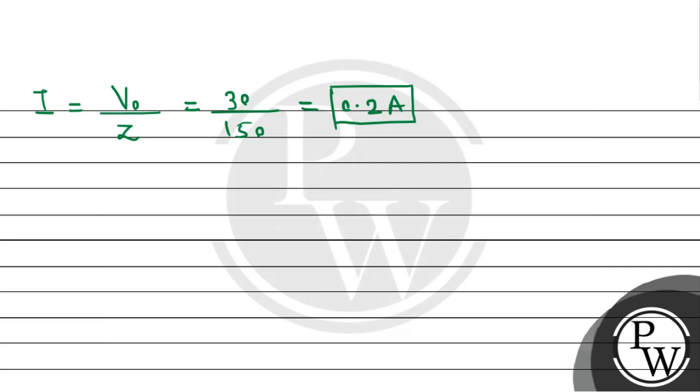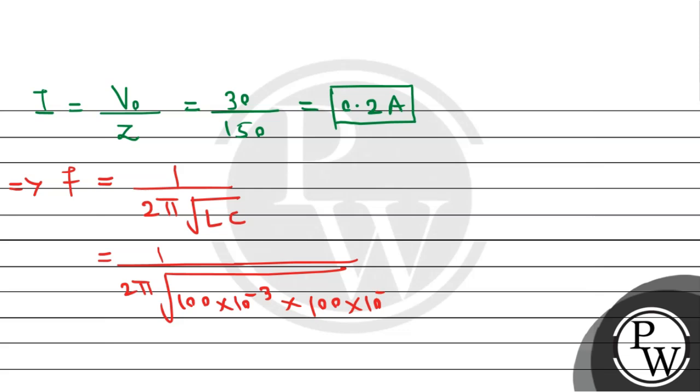Now, next thing we need to calculate the resonance frequency. By using the formula of resonance frequency, F is equals to 1 by 2 pi under root of LC. Just substitute the values. That is 1 by 2 pi under root over the inductance 100 into 10 to the power minus 3, multiplied by capacitance 100 into 10 to the power minus 6. When we simplify this, the resonance frequency will be 100 pi divided by 2 pi, that means 50 hertz.